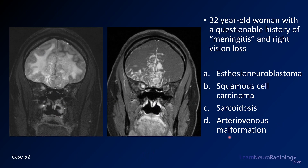Case number 52 is a 32-year-old woman with a questionable history of meningitis and right vision loss. Images include a T2 and a post-contrast through the orbits. Your choices are esthesioneuroblastoma, squamous cell carcinoma, sarcoidosis, or AV malformation.